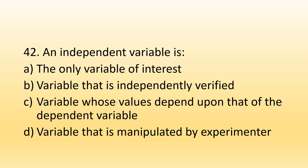Number 42. An independent variable is: Option A, The only variable of interest; Option B, A variable that is independently verified; Option C, A variable whose values depend upon the dependent variable; Option D, A variable that is manipulated by the experimenter. The right option is Option D, Variable that is manipulated by the experimenter. It is the researcher's work to manipulate the independent variable and check its effects on the dependent variable using different statistical tools.